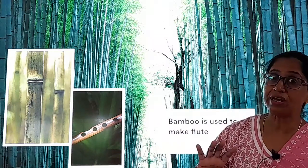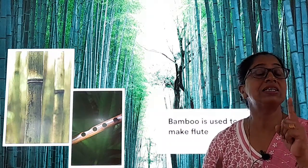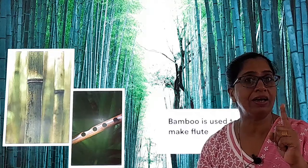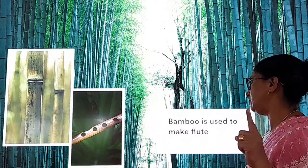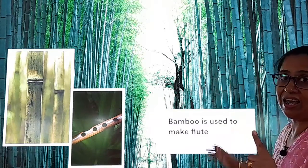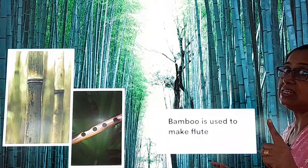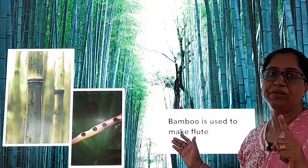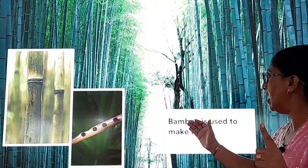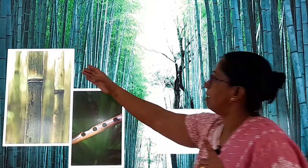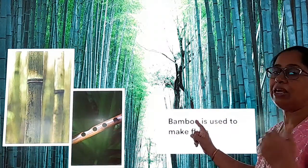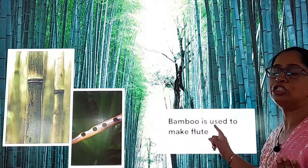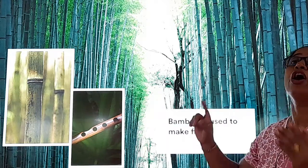In the forest we find animals as well as trees, but today we are going to learn about trees — forest ke trees ke baare mein, pedon ki naam seekhne ja rahe hain. Can you see the picture of the tree? Which tree is this? It is bamboo. Repeat with me — bamboo. See the shoots of the bamboo. Bamboo is used to make flute.